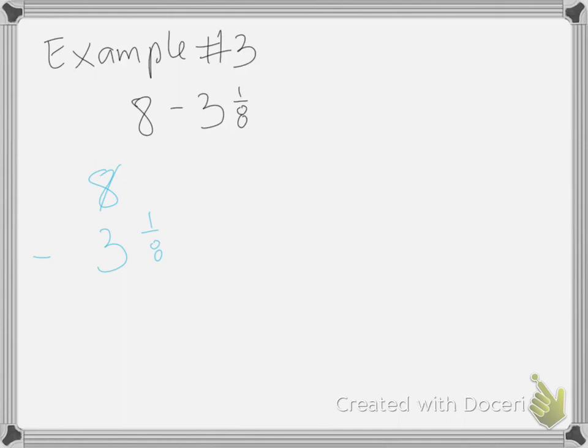Right now. 0/8. That's my fraction right there. So to regroup, this is going to be 7. And then here I'm going to have 8/8, which is my whole. And now we can subtract. 8 minus 1 is 7/8. And then 7 minus 3 is going to be 4.